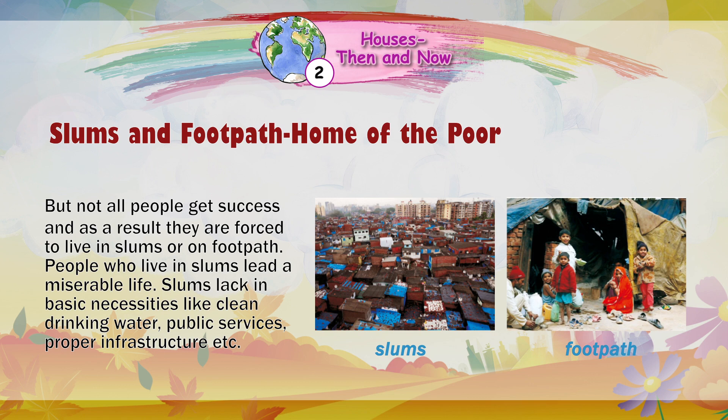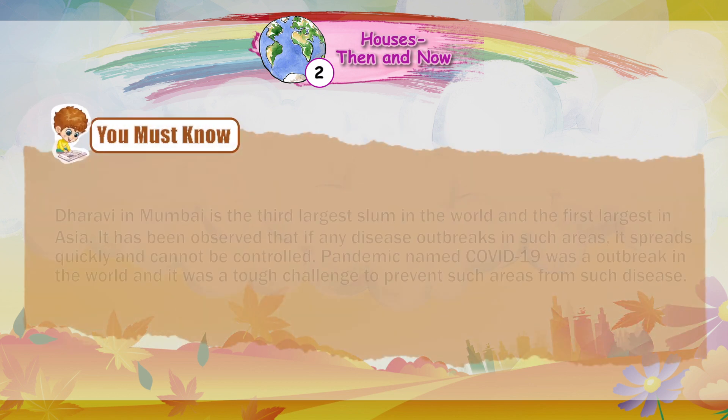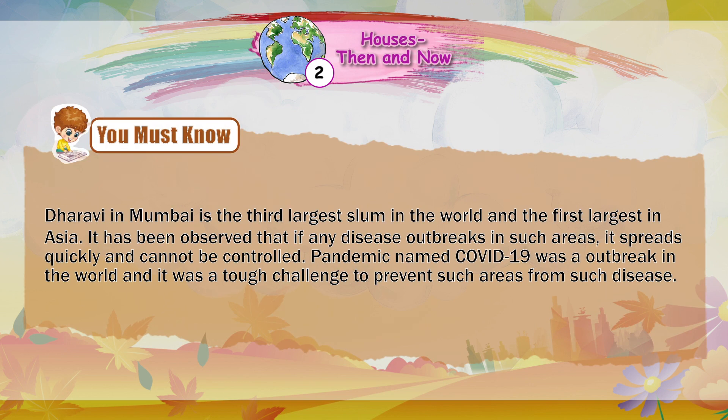People who live in slums lead a miserable life. Slums lack basic necessities like clean drinking water, public services, proper infrastructure, etc. Dharavi in Mumbai is the third largest slum in the world and the first largest in Asia. It has been observed that if any disease outbreak occurs in such areas, it spreads quickly and cannot be controlled. The pandemic named COVID-19 was an outbreak in the world, and it was a tough challenge to prevent such areas from the disease.